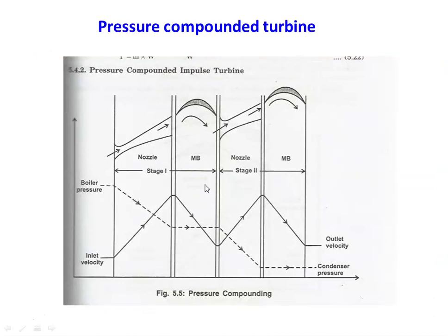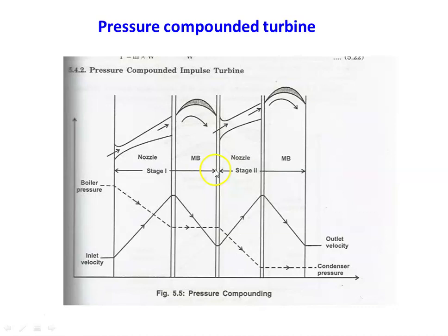Next is the pressure compounded steam turbine. In this design, stage one has a set of nozzles and a moving blade, and stage two again has a set of nozzles and a moving blade — any number of such stages can be arranged. The pressure compounded steam turbine is a combination of number of single stages arranged in series.